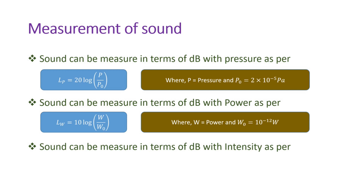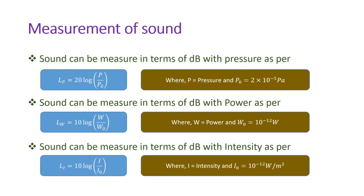We can also measure sound in dB with respect to intensity. The formula is: intensity in dB = 10 log(I / I0), where I is intensity in watts per meter square, and I0 is the reference intensity, which is 10⁻¹² watts per meter square. This is how we calculate sound with different parameters.